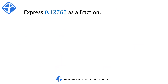In this last example, we're going to be converting the decimal 0.12762 with the repeater on top of the 7 and the 2 into a fraction. What this means is that the first two digits, 1 and 2, do not get repeated. And even though we don't have the dot over the 6, it doesn't mean that the 6 doesn't get included.